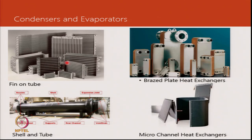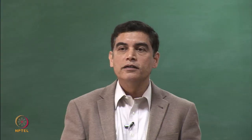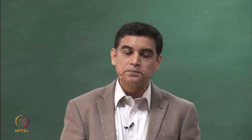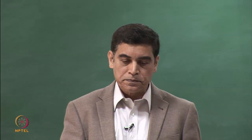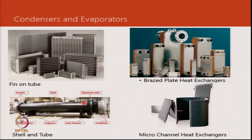These are conventional fin-on-tube heat exchangers in different sizes. These are brazed plate heat exchangers, and more detail on how they function will follow. This is a micro-channel heat exchanger, similar to what we see in car radiators — there are a number of tubes inside a flat tubular section with fins brazed together between the tubes.